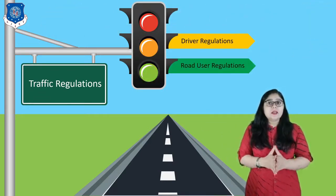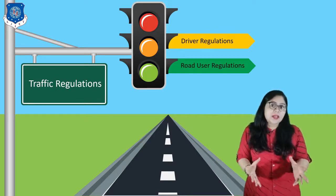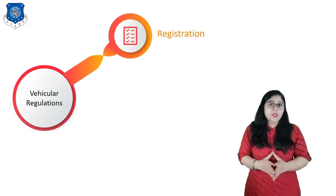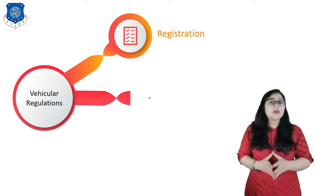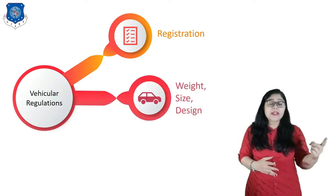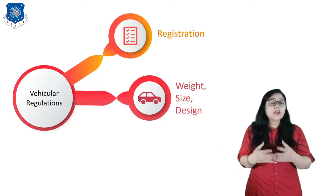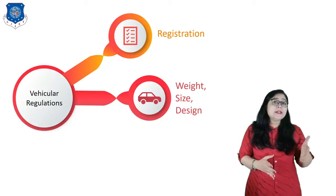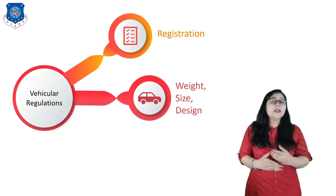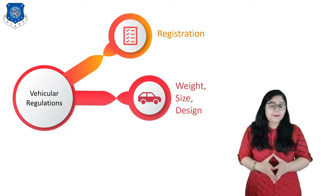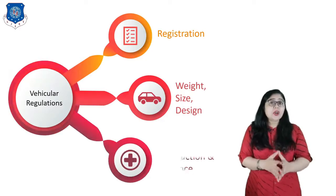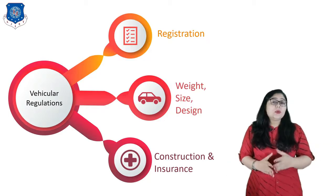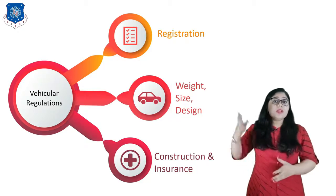First, let us discuss Vehicular Regulations. To understand it, first we have to do registration of any vehicle, which is known as RC book. Then we have to classify vehicles according to their weight, size and design. For example, a four-wheeler can be separated as a heavy truck. The size and design of a normal car and a heavy truck are very different. Lastly, we have basic knowledge of construction of any vehicle, and insurance of any vehicle plays a key role while we want to claim it.